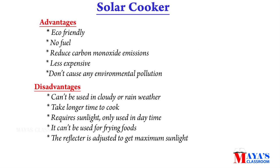Advantages of a solar cooker: it is eco-friendly, requires no fuel, reduces carbon monoxide emissions, is less expensive, and does not cause environmental pollution. Disadvantages: it cannot be used in cloudy or rainy weather, takes a longer time to cook, requires sunlight so can only be used in daytime, and cannot be used for frying foods. The reflector must be adjusted to get maximum sunlight.